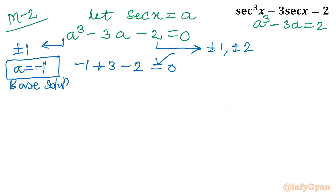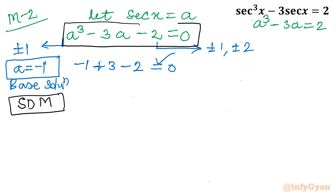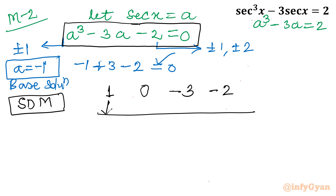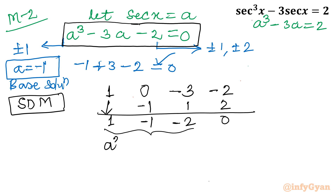Now I will use synthetic division. The cubic equation is a³ − 3a − 2 = 0, with coefficients 1, 0, −3, −2. Dividing by (a + 1) using synthetic division with root −1 gives coefficients 1, −1, −2, remainder 0. So the reduced equation is a² − a − 2 = 0.